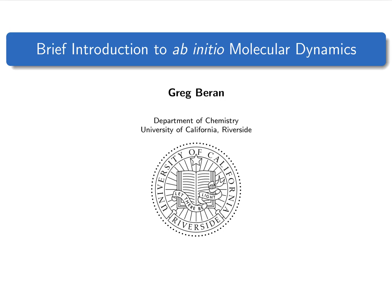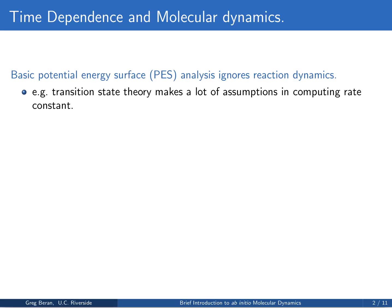I'd like to give a brief overview of the methods of ab initio molecular dynamics. So far in this course, we've focused on the potential energy surface. We optimize structures for reactants, products, and transition states, calculate energy differences between these, and infer things about the reaction rates and behaviors from those.